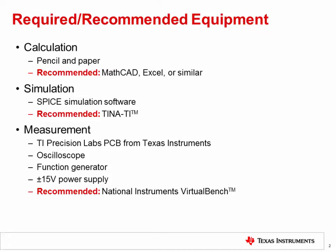Finally, the real-world measurements are made using a printed circuit board, or PCB, provided by TI. If you have access to standard lab equipment, you can make the necessary measurements with any oscilloscope, function generator, and plus or minus 15 volts power supply. However, we highly recommend the Virtual Bench from National Instruments. The Virtual Bench is an all-in-one test equipment solution which connects to a computer over USB or Wi-Fi, and provides power supply rails, analog signal generator and oscilloscope channels, and a 5 and 1 half digit multimeter for convenient and accurate measurements. This lab is optimized for use with the Virtual Bench.